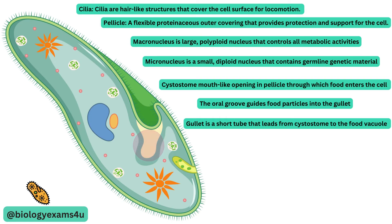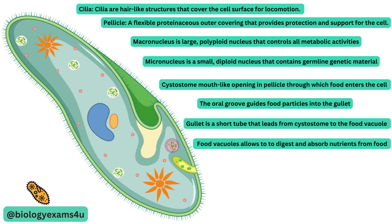Within the gullet, food particles are transformed into food vacuoles. Food vacuoles allow paramecia to digest and absorb nutrients from their food. The food ingested through their cytostome is engulfed by a membrane to form a food vacuole. After digestion by digestive enzymes, the nutrients are absorbed into the cytoplasm and the waste products are expelled through the cytoproct.